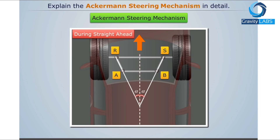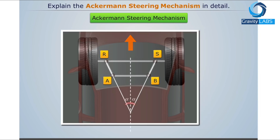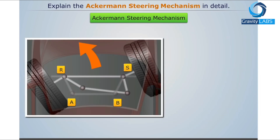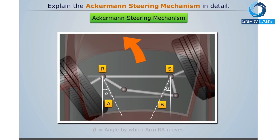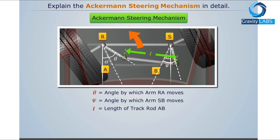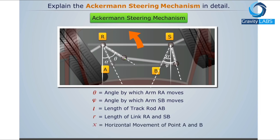Now consider the vehicle taking a left turn. Let FITA be the angle by which the arm RA moves, FI be the angle by which the arm SB moves, L be the length of the track rod AB, R be the length of link RA and SB, and X be the horizontal movement of point A and B.